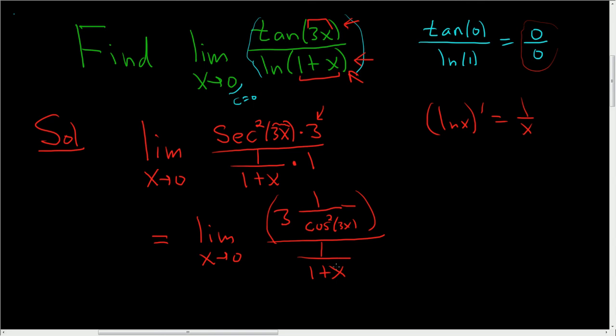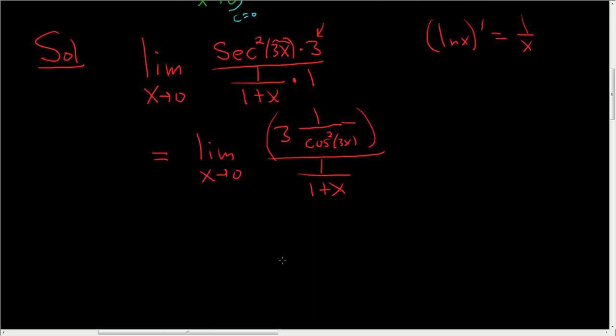You can just plug in 0 here. Let's just go ahead and clean it up first. So this is equal to the limit as x approaches 0 of 3 over cosine squared 3x, and all of this is being divided by 1 over 1 plus x.